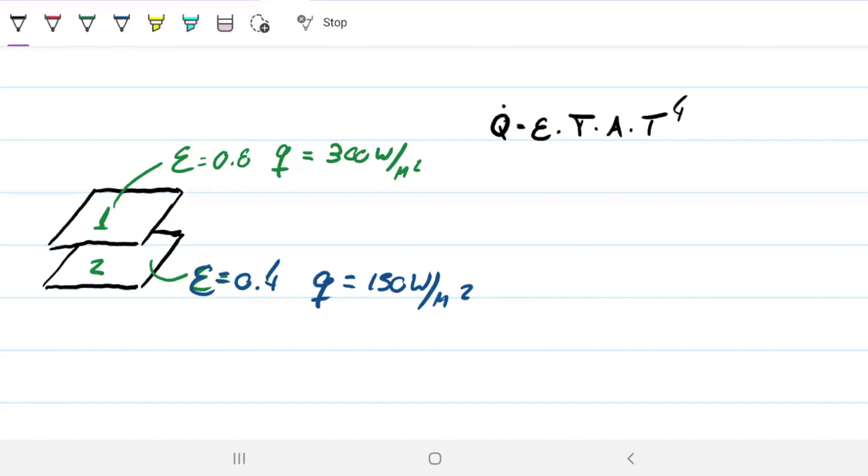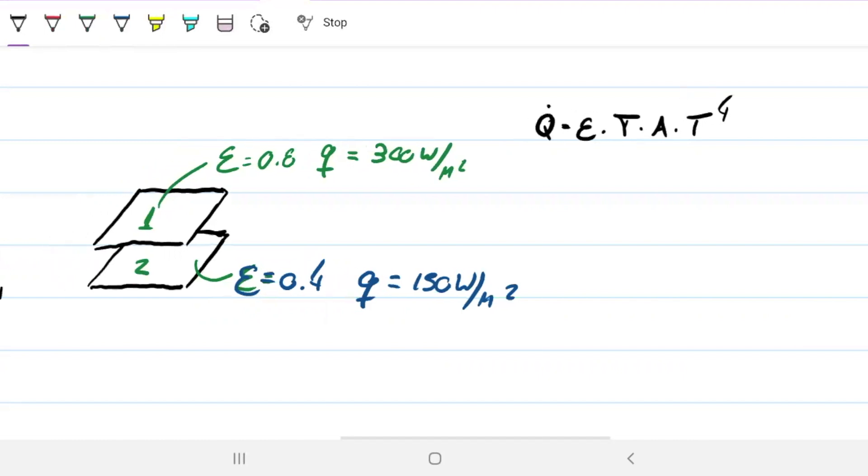Know that I'm not interested in Q net just yet. I'm just interested in Q, how much that body is emitting. And then obviously, if we are looking for the Q between the two, we also have to account for the shape factor.